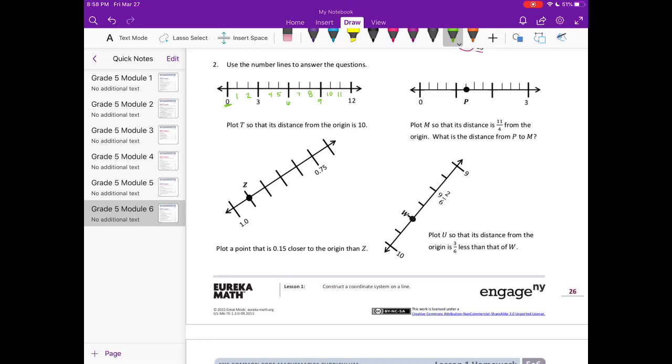So we're looking to plot T so the distance from the origin is 10, meaning that from 0 the distance is 10. So 0 plus 10, T is going to go right there.